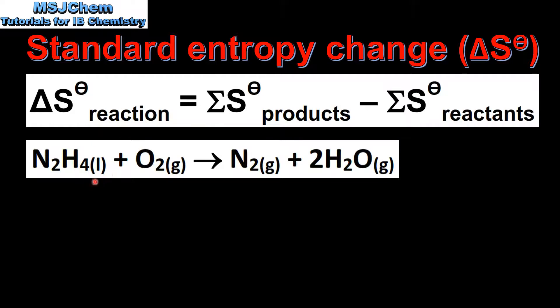In the reactants we have one mole of liquid and one mole of gas and in the products we have three moles of gas. Because gases have a higher entropy than liquids we can predict that the sign of the entropy change will be positive.